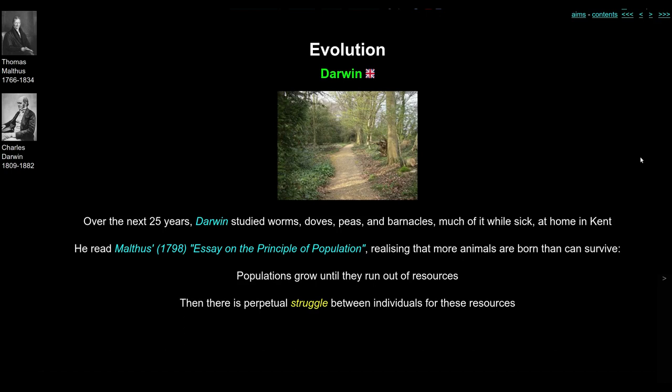One book said to be quite influential on his theory of evolution by natural selection was Malthus's essay on the principle of population. In reading that, Darwin realised that there are more animals born all the time than can survive, and populations keep growing until they run out of resources. When that's the case, there's a struggle between individuals of the same species and of other species for these same limited resources.